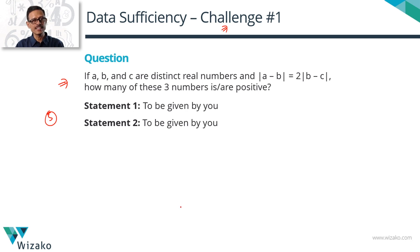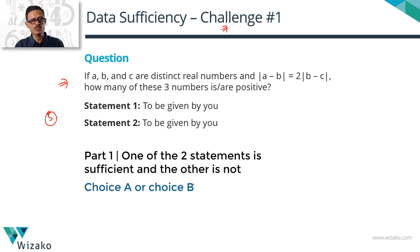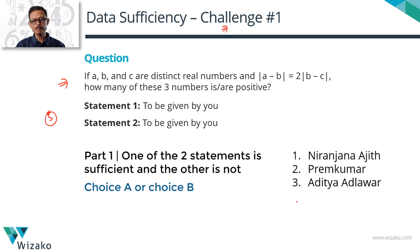Through this challenge, I had responses from four of you, and I took statements from three of you to discuss in this video, plus one statement I added myself. This video is divided into four parts. Part one looks at statements that correspond to answer choices A or B — essentially cases where one of the two statements is sufficient and the other is not. The three people whose statements I've used are Niranjana Ajit, Prem Kumar Kamraj, and Aditya Adilavar. Congrats — beautiful statements!